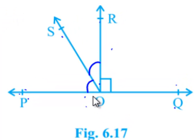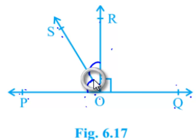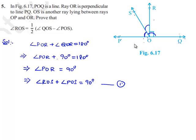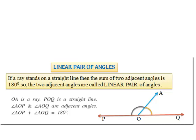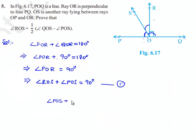Again, if we consider POQ is a straight line intersected by ray OS, then angle POS and angle QOS form a linear pair again. Therefore, the sum of angles forming a linear pair equals 180 degrees, so angle POS plus angle QOS is equal to 180 degrees.